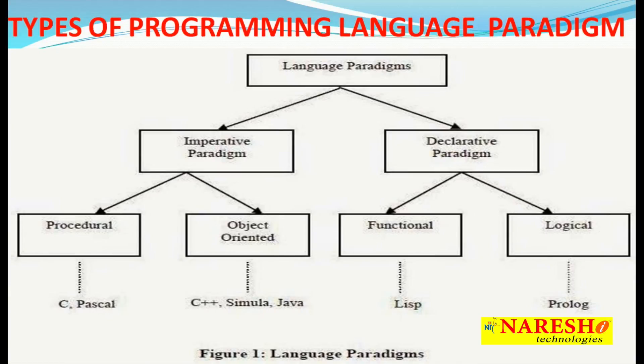Before going into Python definitions, let me explain what programming paradigms are. In software, programming language patterns are classified mainly into two types — a paradigm meaning is a pattern, which is nothing but a model. The two patterns are: number one, the imperative paradigm, and number two, the declarative paradigm. The imperative paradigm has two main types: object-oriented and procedural.